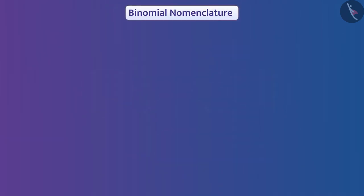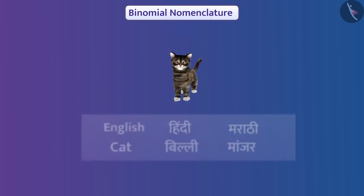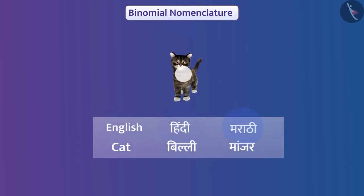Now let's talk about binomial nomenclature. We know that organisms have different names in different languages, which can cause difficulties. For example, when a person talks about an organism in one language, a person speaking another language may not understand which organism is being referred to. To solve this problem, the binomial nomenclature proposed by Carlos Linnaeus was chosen.